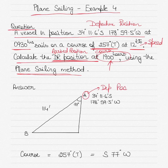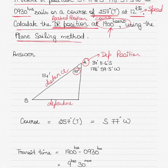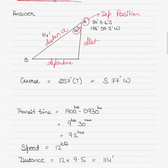I have my departure position here. I am doing a course of 257 degrees — I'll explain how that becomes 77 shortly. This line becomes my distance, this is my departure, and this is my D-lat, because plane sailing assumes the latitudes are equally spaced.